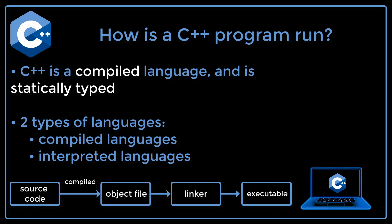A compiled language is like the first scenario — it gets converted directly into machine code, which the computer understands and can execute. An interpreted language is different; it gets run through a program called an interpreter that translates it into machine code line by line. The fact that C++ is a compiled language means that when we run the code, it gets compiled into machine code that is directly executed on the machine and does not need an interpreter — the middleman, so to speak.